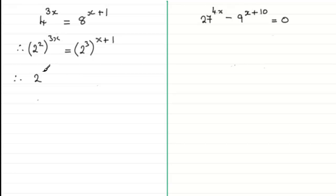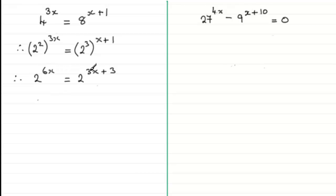Then to simplify, we multiply the 2 with the 3x, so we get 2 to the power 6x. And for the other one, we multiply 3 with the x plus 1, and we end up with 2 to the power 3x plus 3. Now we've got our two terms to the same base 2, so we can equate the powers.